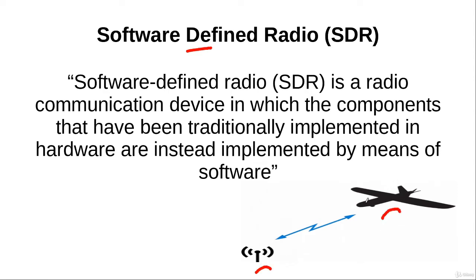For this data communication link, we would need a radio communication device in the ground station as well as a radio communication device in the UAV. And we can use the software defined radio as this communication device.